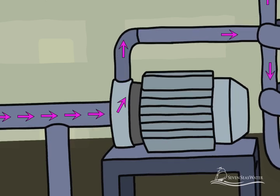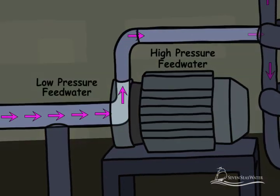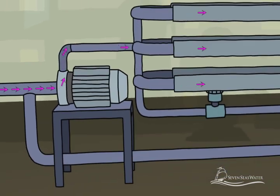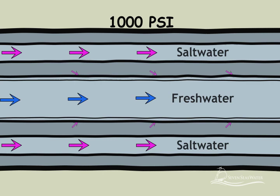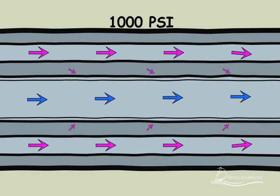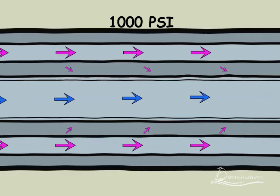High-pressure pumps increase the pressure of the seawater up to 1,000 psi. The pressure needs to be sufficiently high to overcome the naturally occurring osmotic pressure and force water from the saltwater side through the reverse osmosis membranes to the freshwater side.